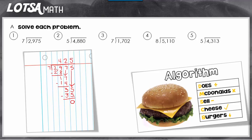Alright, let's do one more together. For number 2 we have 4,880 divided by 5. I see I'm going to do 3 rounds because 4 can't be divided by 5, so for my first round I'm going to look at 48.